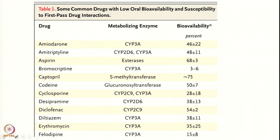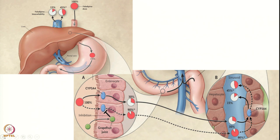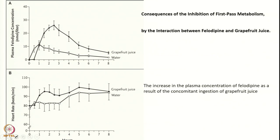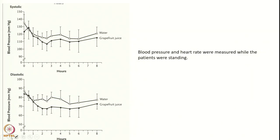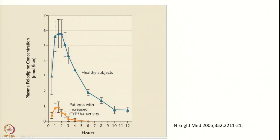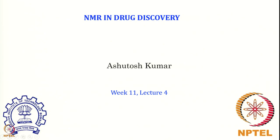I showed you the example of felodipine — a drug for blood pressure. If it is taken with grapefruit juice, it increases the bioavailability, and that actually helps in having a more pronounced effect. Plasma felodipine concentration also varies depending upon cytochrome CYP3A4 activity. In a patient with increased activity, the bioavailable concentration in plasma is very low compared to a healthy person. Therefore, understanding drug metabolism in a quantitative manner is of paramount importance.